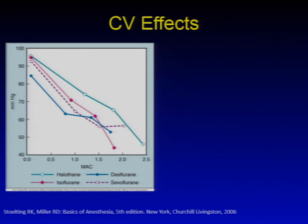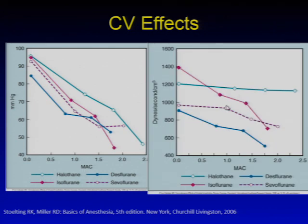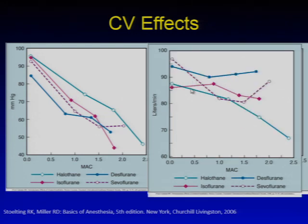Inhaled agents decrease mean arterial pressure — as MAC increases, all of the mean arterial pressures drop from the four major agents. The reason they drop is different, though. For all the agents besides halothane, the SVR is what really drops when these agents are given. For halothane, SVR stays pretty constant. Halothane's drop in MAP comes from a drop in cardiac output as MAC increases, where it's probably more related to the change in SVR for the other agents.